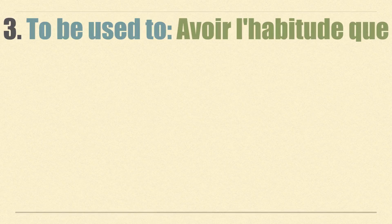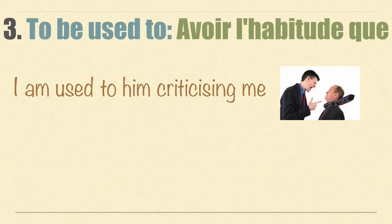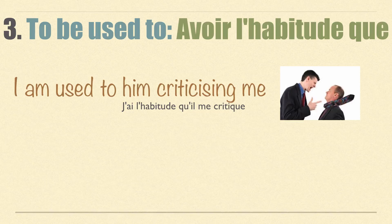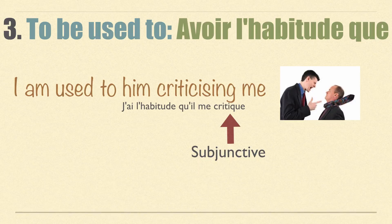Now, how to translate 'to be used to' with the expression avoir l'habitude que: in French this is followed by the subjunctive mood. For example, 'I'm used to him criticizing me' becomes j'ai l'habitude qu'il me critique. Here, critique is the subjunctive mood. Note that for verbs whose infinitive ends in -er, there is no difference between the indicative present and the subjunctive, but it is good to know it is subjunctive here.